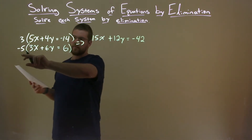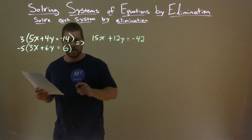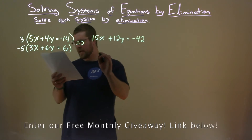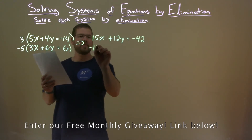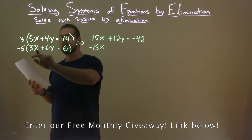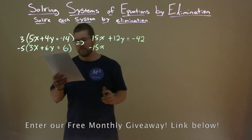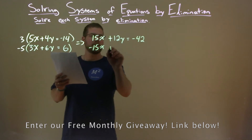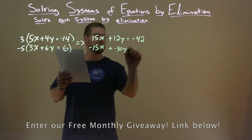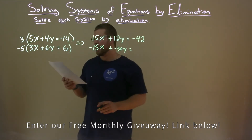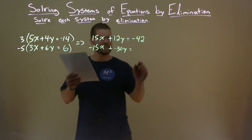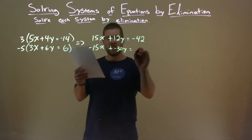Negative 5 now to the second equation. Negative 5 times 3x is negative 15x. Negative 5 times 6y is negative 30y. And negative 5 times 6 is negative 30.